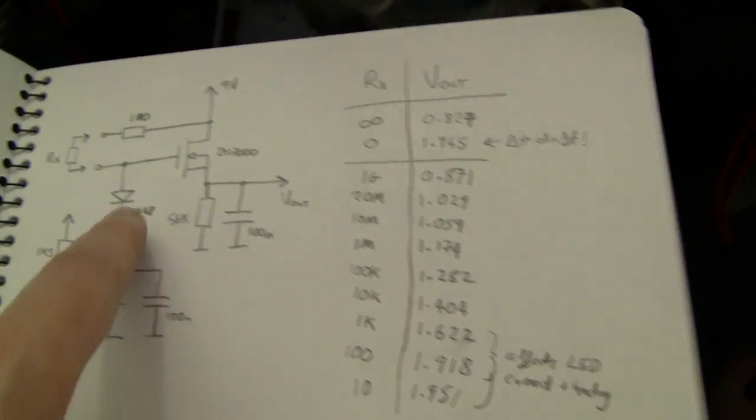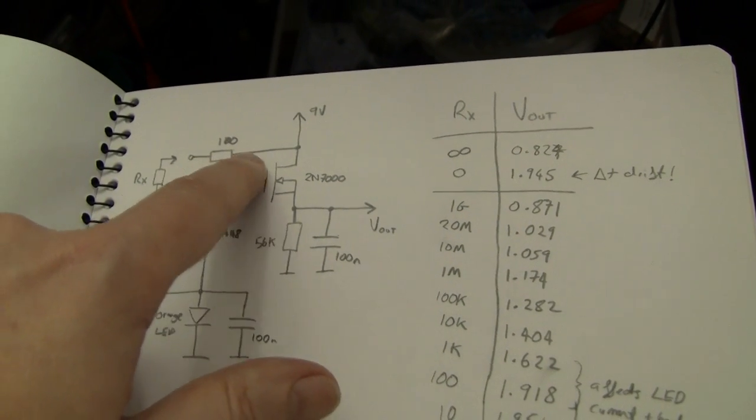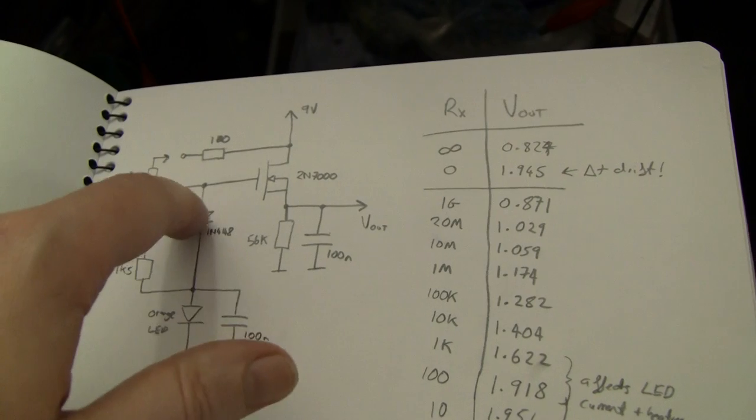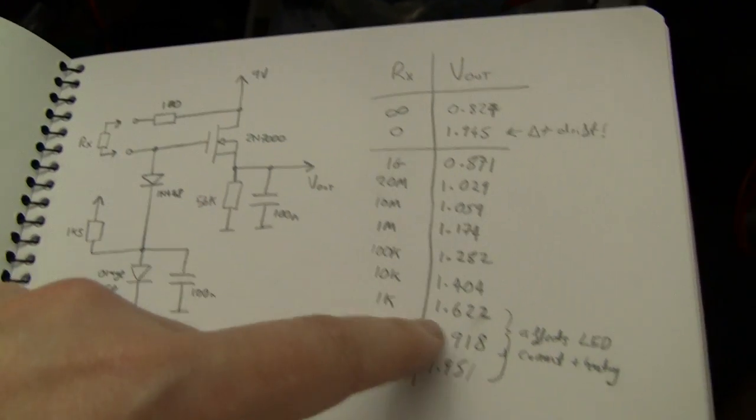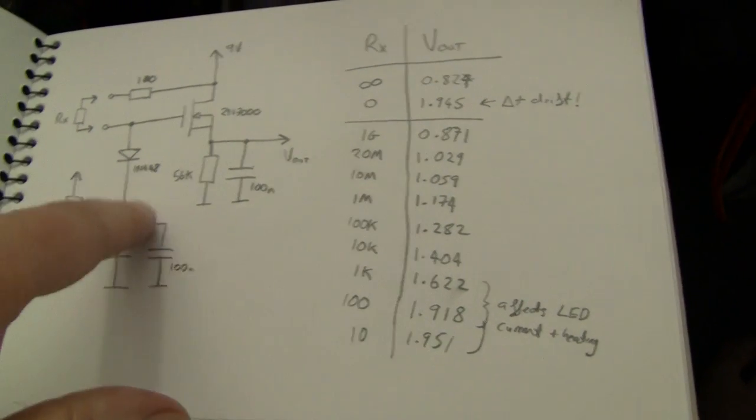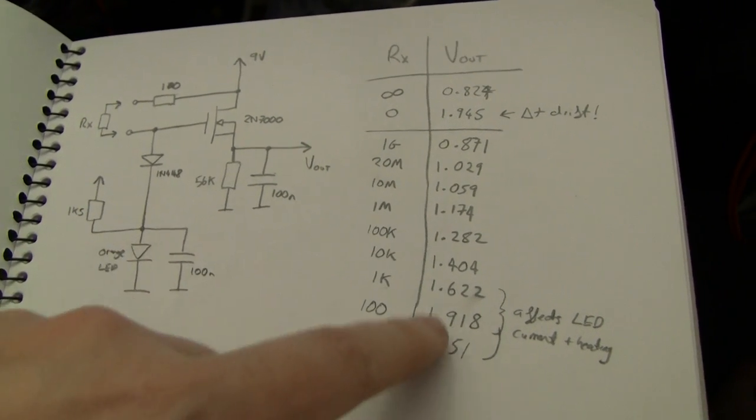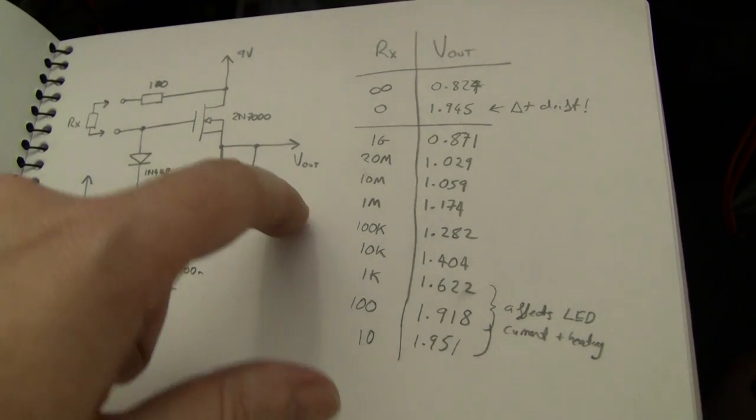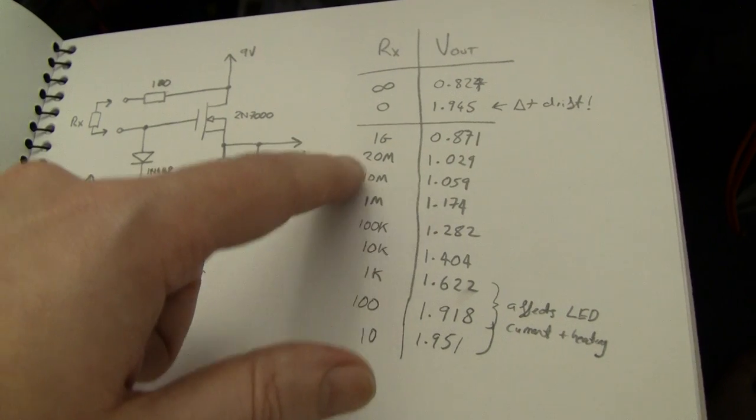Once you start getting down to small resistances, you can see I put a 100 ohm in series here with the unknown resistance to stop blowing up the diode and once the current starts to get quite high, the warming in the diode makes these numbers drift around a lot but for the small numbers it works pretty well.